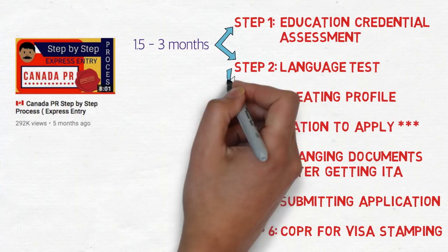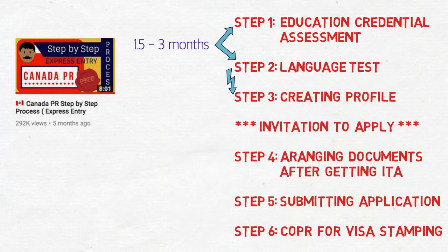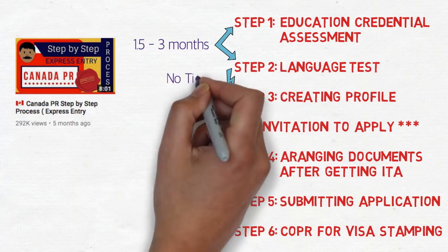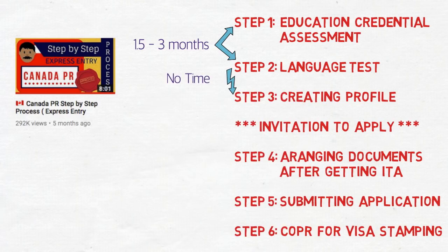Moving from Step 2 to Step 3 doesn't take any significant time. Once you have your ECA and language test results ready, you can create your Express Entry profile in a couple of hours. You just need to be cautious while filling in all the details to avoid mistakes.